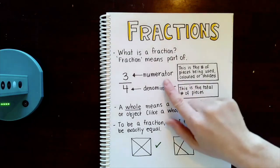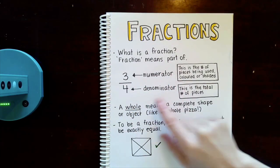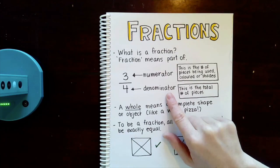When you see a fraction which looks like this, there's a top number called the numerator and a bottom number called the denominator.